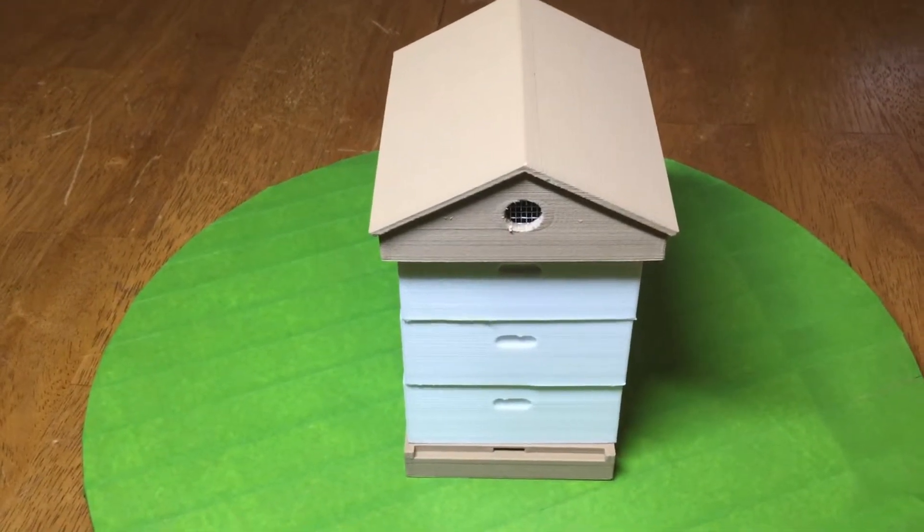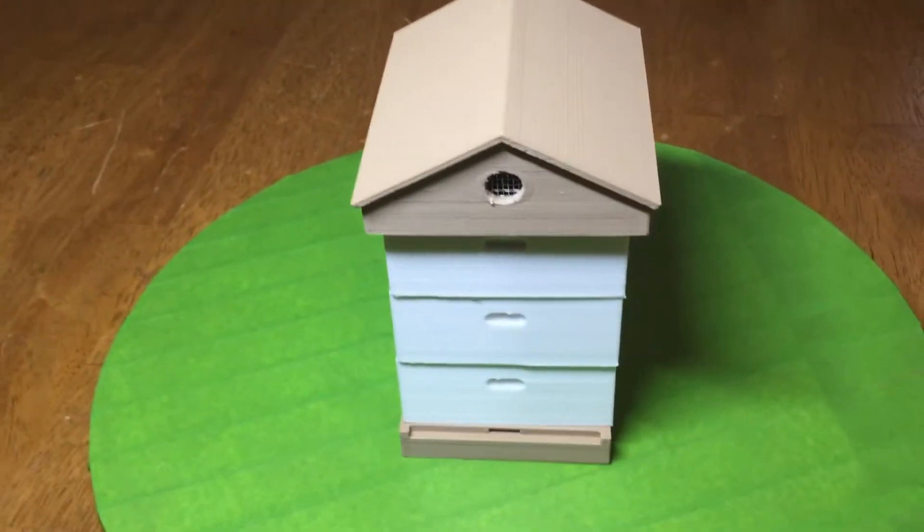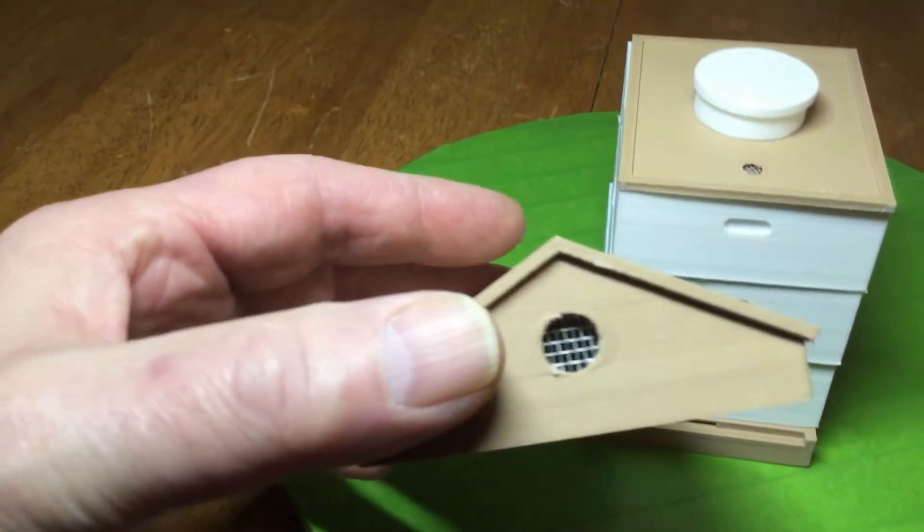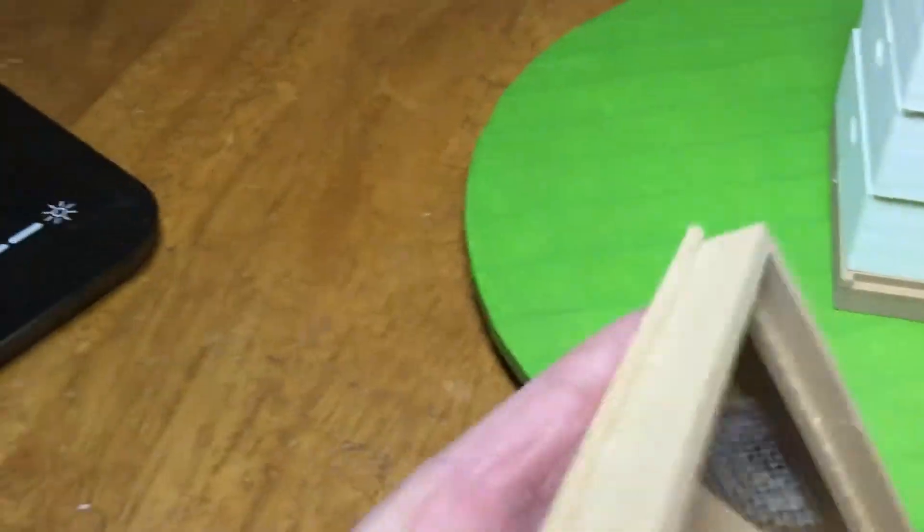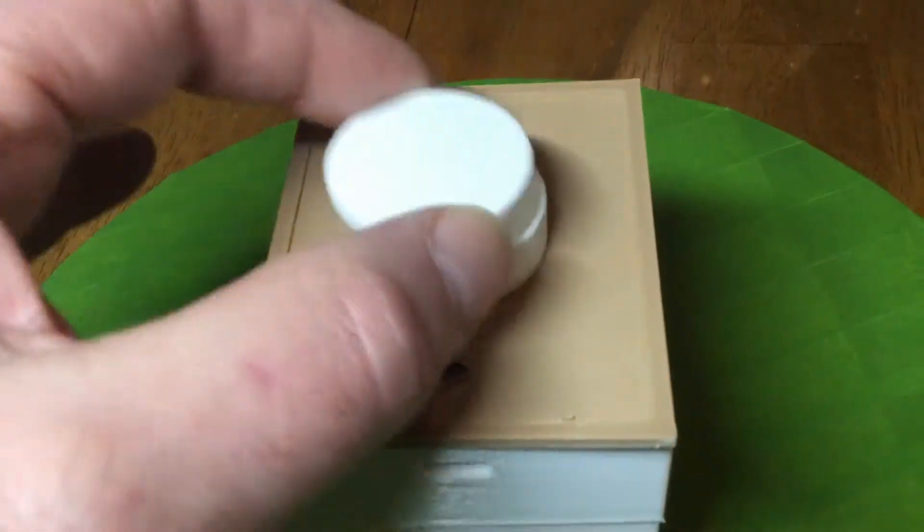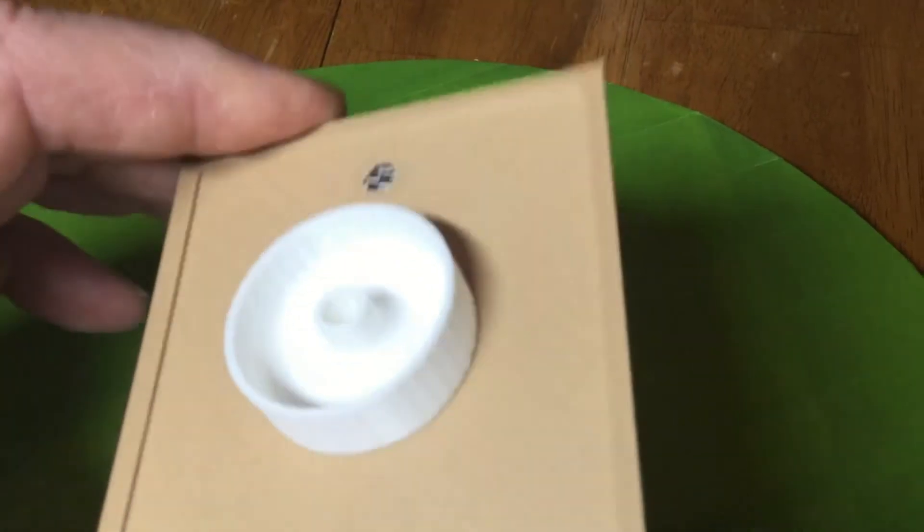First up is a replica of my beehives that I have in the backyard. As you can see on the top I have the gabled roof and I've got a little bit of screen in there for the vent. And then I have the top board and on the top board is a sugar feeder. The sugar feeder has a hole through it so the bees could come up to feed if they were real bees.